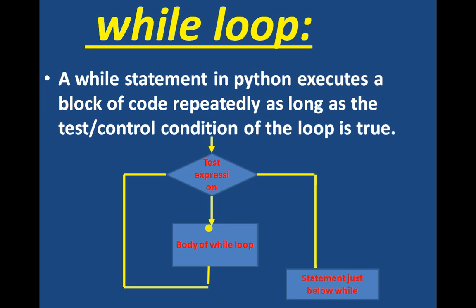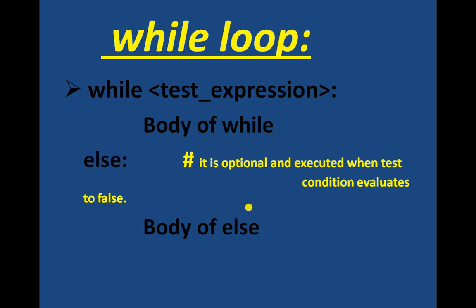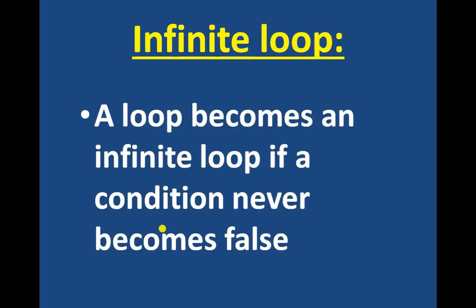Next is the while loop. The while statement in Python executes a block of code repeatedly as long as the test or control condition of the loop is true. The syntax uses a while keyword, followed by a test expression or condition, then the body of the while loop, and optionally a statement just below the while. If the test is true, it goes into the body of the while. If the test condition is false, it executes the statements below the while loop. The else part is optional and is executed when the test condition becomes false.